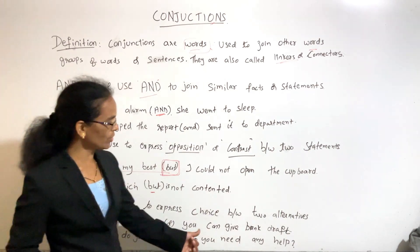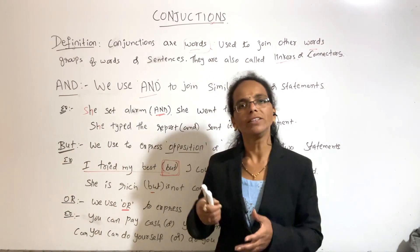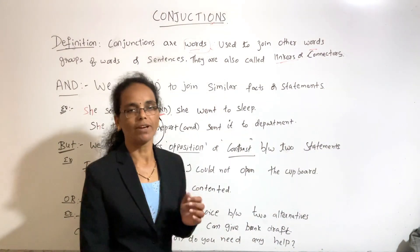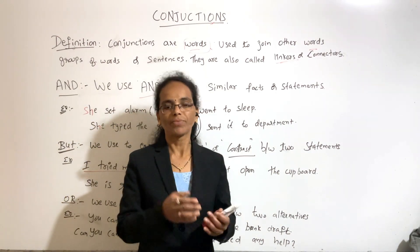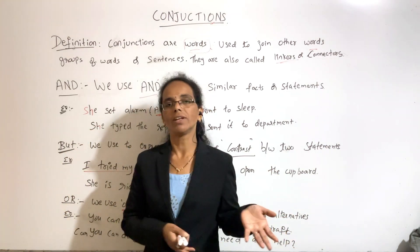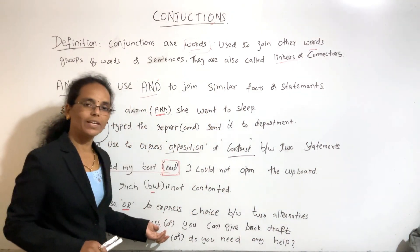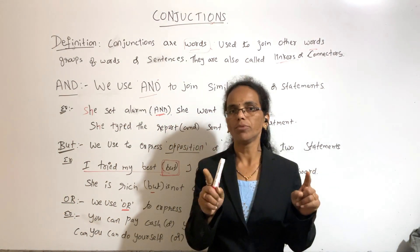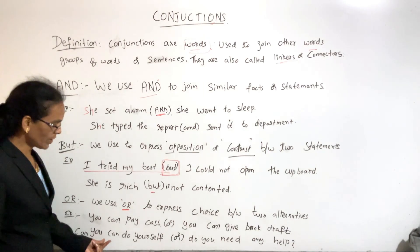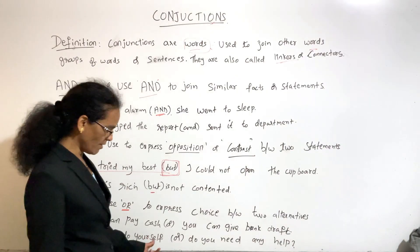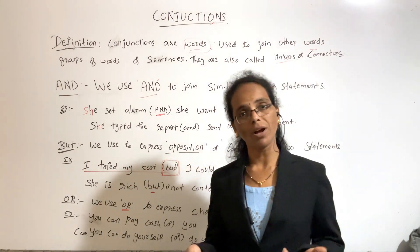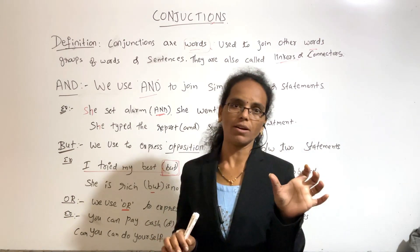For example: You can pay cash OR you can give me a bank draft. Either you pay me cash or you can pay through Google Pay or Phone Pay — different options are available. Can you do it yourself OR do you need any help? You can do it yourself or you can take help.